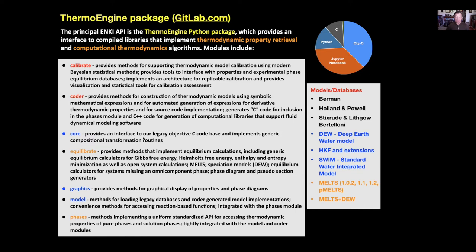There are other modules for doing aspects of modeling and model integration. There's a module for calibrating thermodynamic models, which is very important. It uses modern Bayesian statistical methods to do the calibration. We've spent a lot of time developing the software in this module to facilitate proper calibration of thermodynamic models, which are intrinsically difficult to do because of the intrinsic correlation in the underlying databases. The Enki package also provides access to underlying thermodynamic and experimental data used for calibration of models.